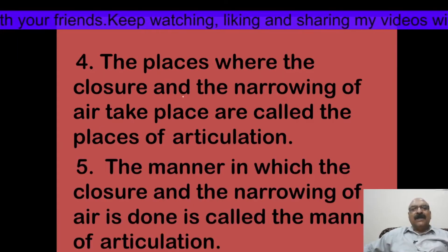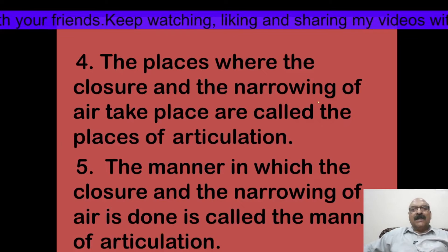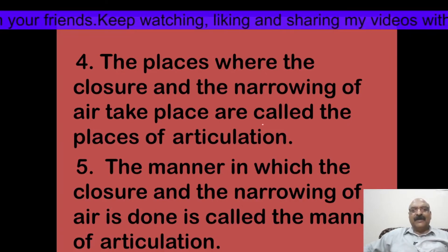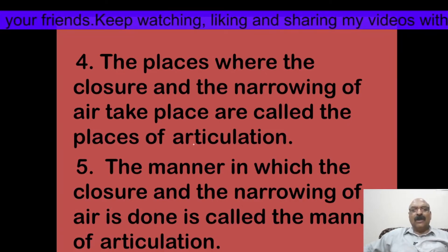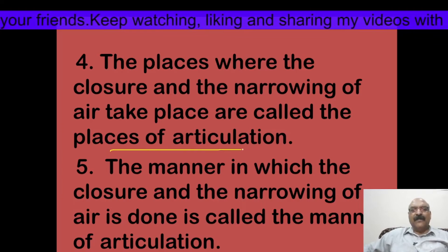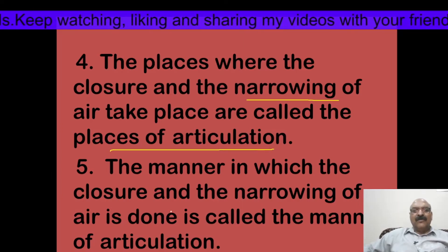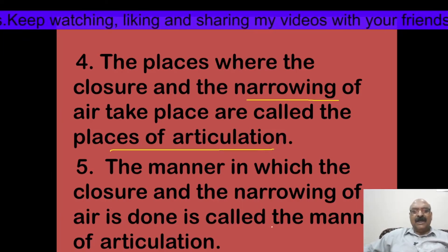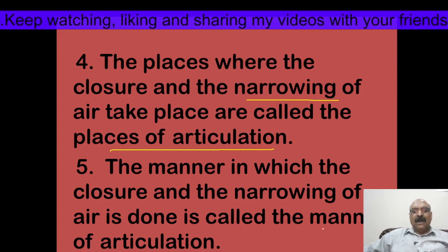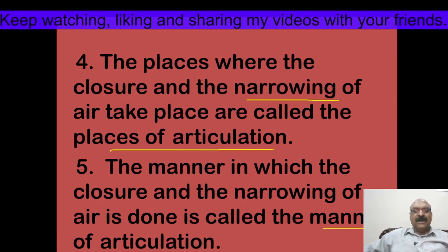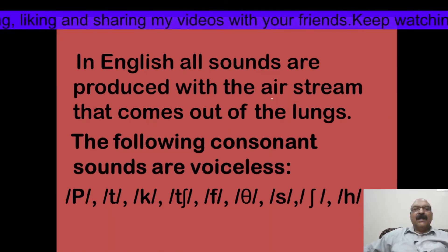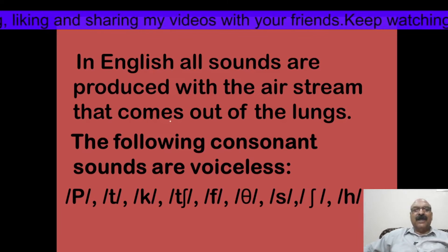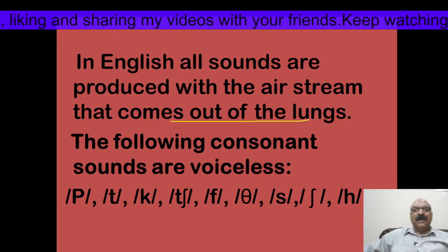The places where the closure and the narrowing of the air takes place are called the places of articulation. The manner in which closure and narrowing of air is done is called the manner of articulation. In English, all sounds are produced with the air stream that comes out of the lungs.